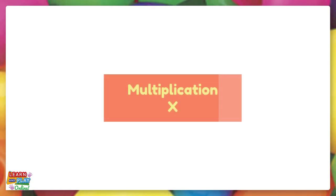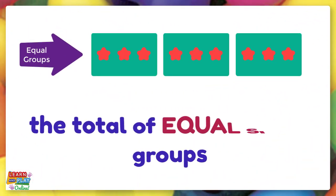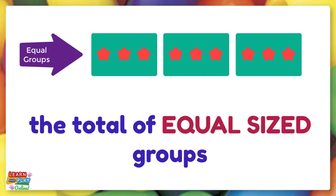Multiplication is represented by the mathematical symbol that looks like the letter X. When we see that symbol, we say times. Put simply, multiplication is finding the total of equal-sized groups.